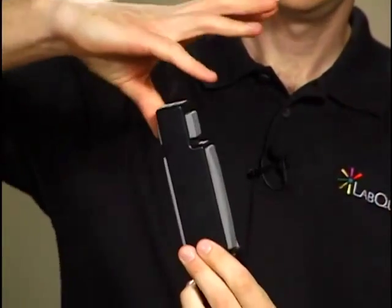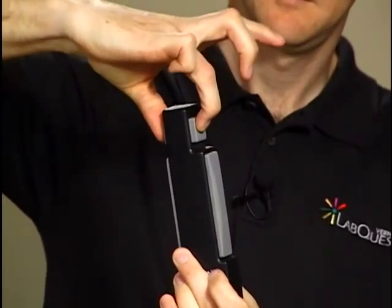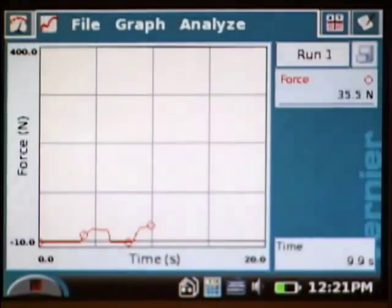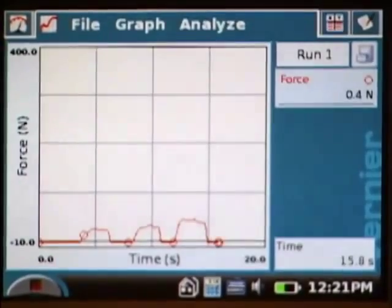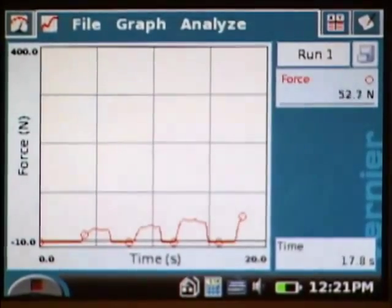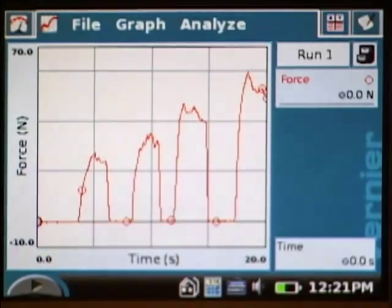I'm going to start with my pinky finger and grip as hard as I can for a couple of seconds. Then I'm going to switch to the next finger, and the next finger, and lastly, I'm going to do my index finger. At the end of the run, the software will auto-scale so that we can see the graph of force versus time for only where data appeared on the graph.